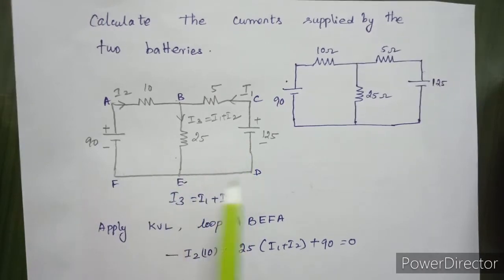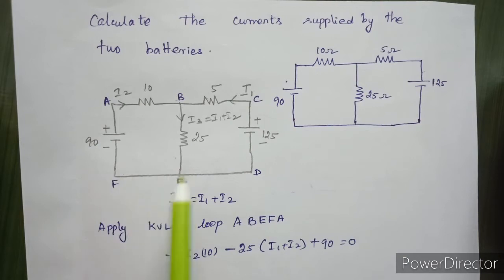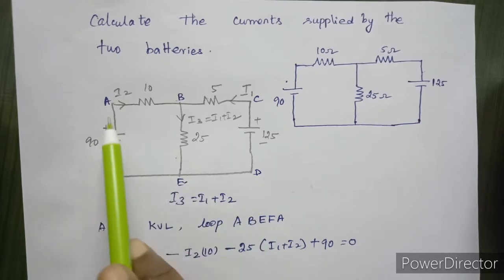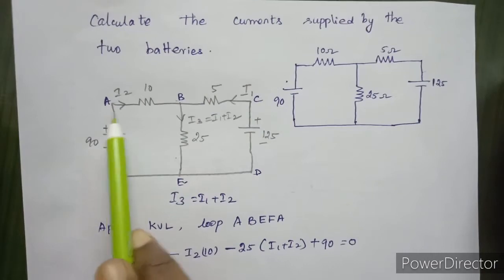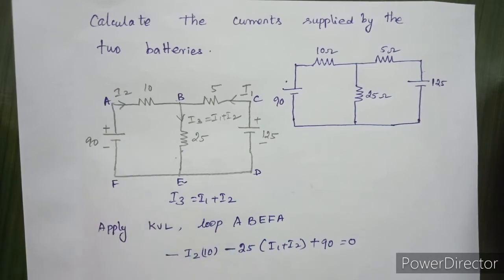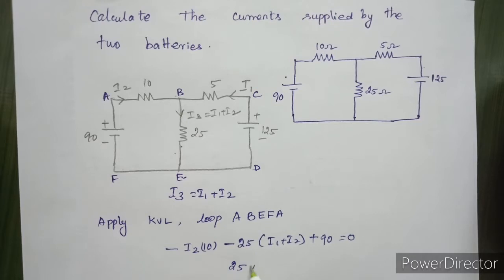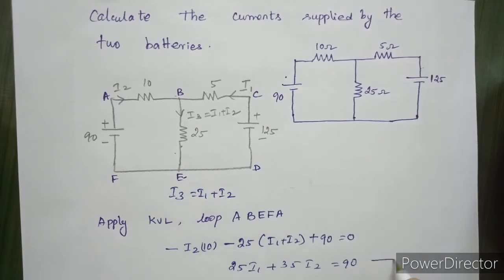There is some confusion, but we can solve this problem. There are many methods and this is the easiest method. If we learn the same method, we can solve this problem. There is a loop. The resistance gives a voltage drop: minus I1 plus I2 minus 2 plus. It is the voltage rise, plus 90. We can simplify this equation. It simplifies to: I1 plus 35·I2 equals 90. This is equation number 1.